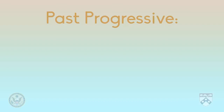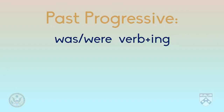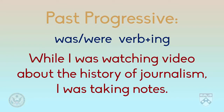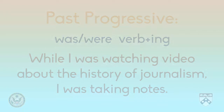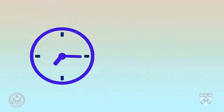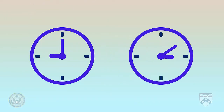Now let's move on to talk about the structure of the past progressive. Similar to the present progressive, the past progressive is formed with either 'was' or 'were' and the -ing form of the verb. For example, 'While I was watching the video about the history of journalism, I was taking notes.' This means that there was a duration, a period of time, when you were watching and taking notes.